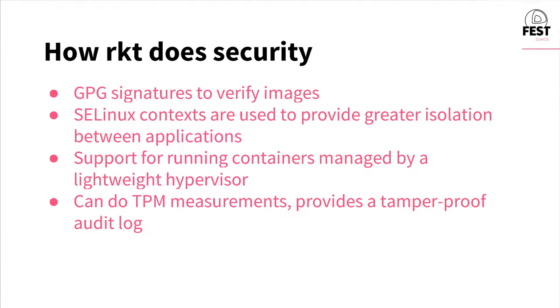How Rocket focuses on security: first and foremost, GPG signatures are required for any images that Rocket imports to its store, whether off the local disk or over the network, to provide cryptographic guarantees about where images have come from and if they haven't been modified in transit. Rocket can also use SELinux contexts, so if someone manages to break into an application, SELinux provides an additional layer of defense. Rocket also supports running containers inside a lightweight hypervisor — you can run your container inside an ephemeral virtual machine, so they'd need to break out of the VM instead of just the Linux namespaces. There's also support for TPM measurements, which uses a chip on your motherboard to provide cryptographically verifiable audit logs for exactly what applications you've been running.